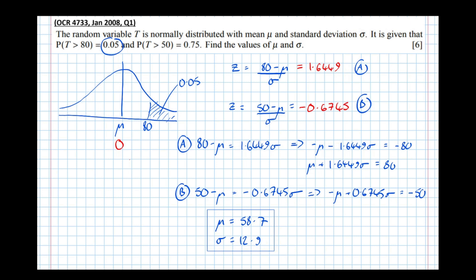Going back to double-check what we did: we worked out the z value — the number of standard deviations from the mean that 80 lies in this distribution. That was (80 minus mu) over sigma. Then we did it a different way using the N(0,1) distribution: knowing the area to the right is 0.05, we found how many standard deviations from the mean that boundary lies. Because the standard deviation is 1, the boundary corresponds to 1.6449 standard deviations. We did the same for the other probability, then solved the two equations simultaneously, which led to those answers.